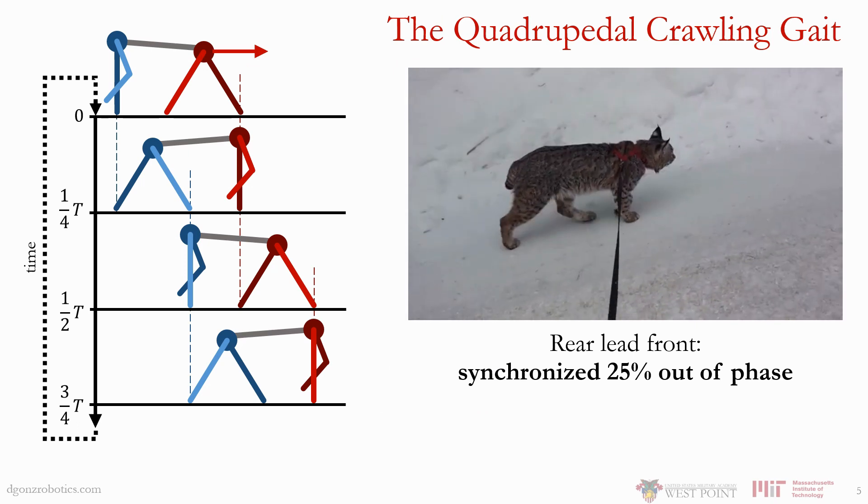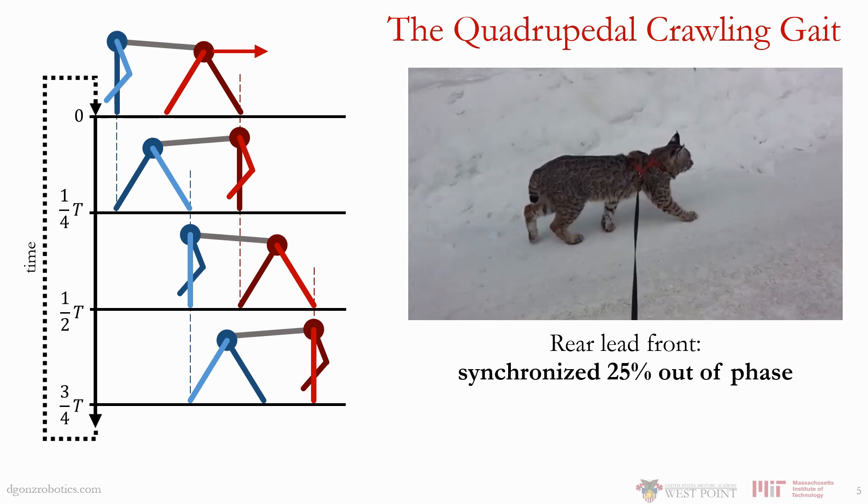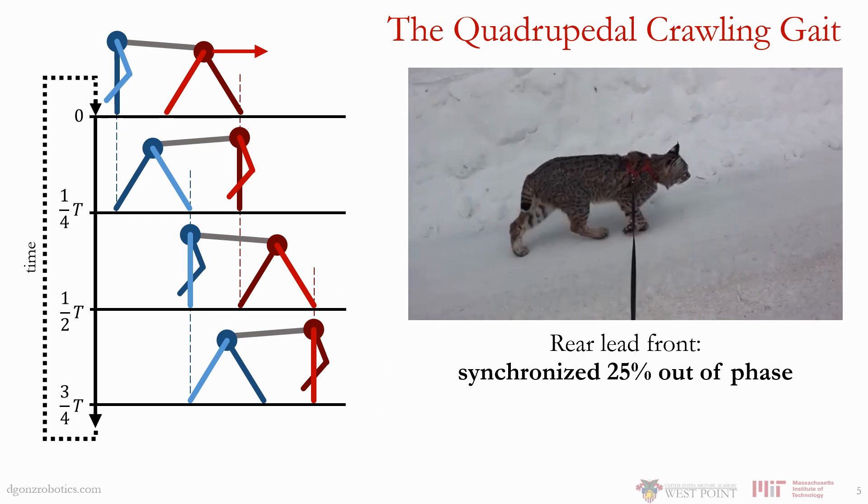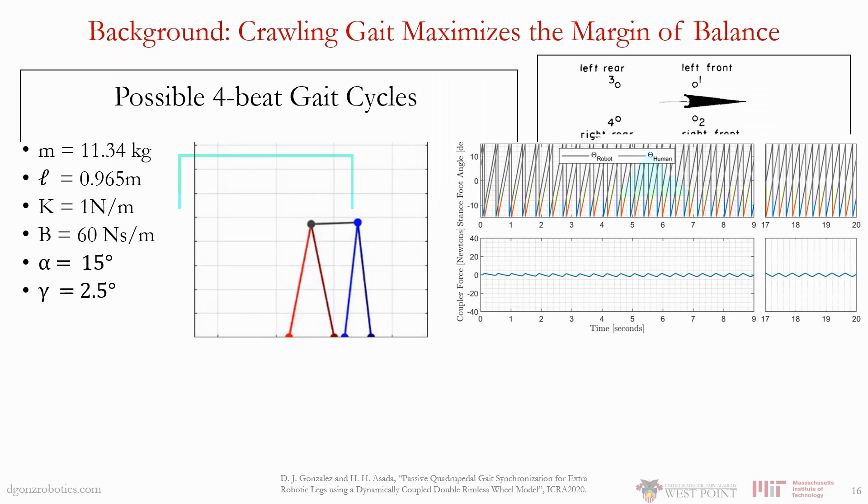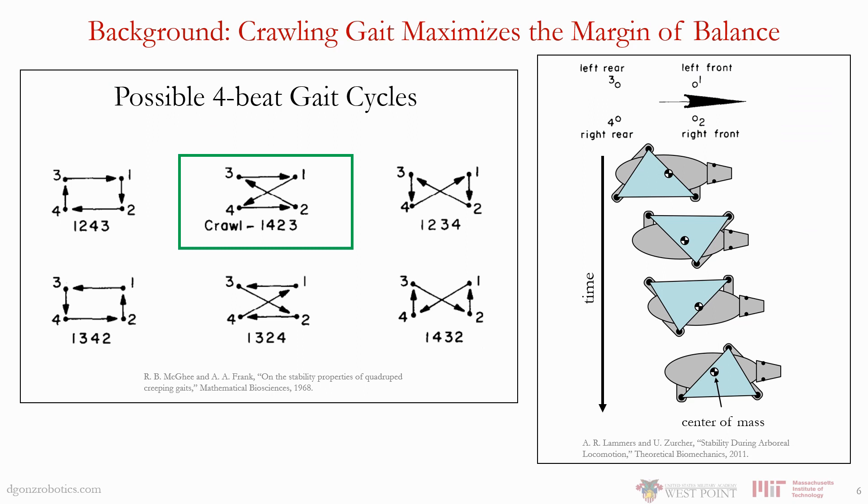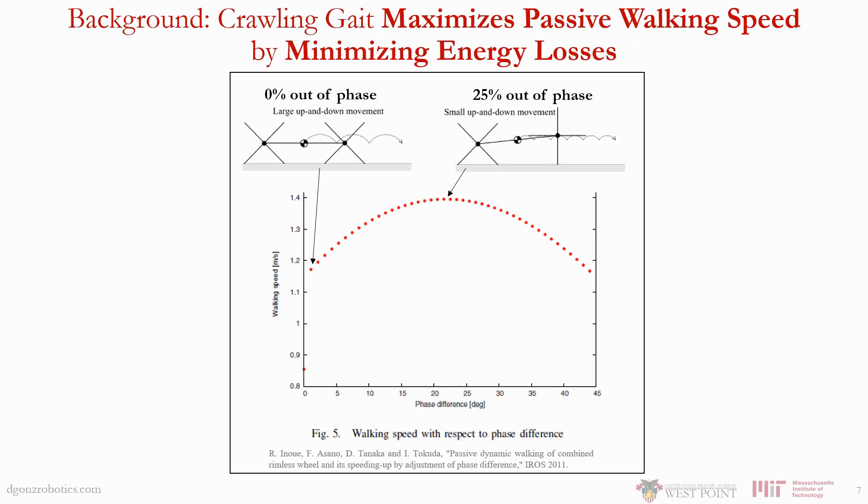In this gait cycle, the rear leg footfalls lead the front leg footfalls in such a way that the front and rear halves are synchronized, but 25% out of phase. Of the six possible 4-beat footfall patterns achievable by quadrupeds, this gait cycle maximizes the center of mass margin from the edge of the support polygon. 4-beat walking exhibits minimum energy losses, leading to the fastest steady state passive walking speeds.